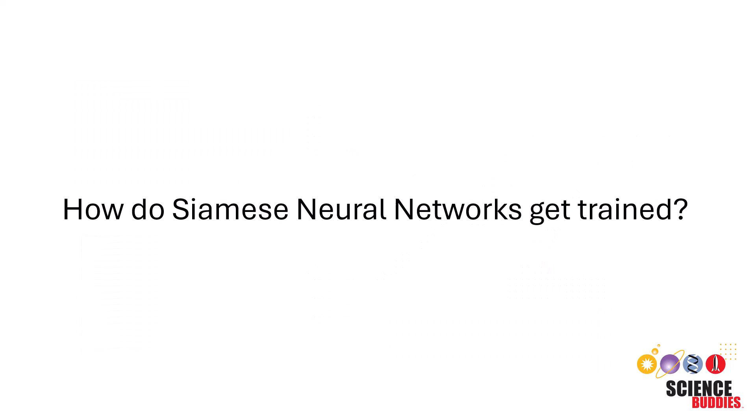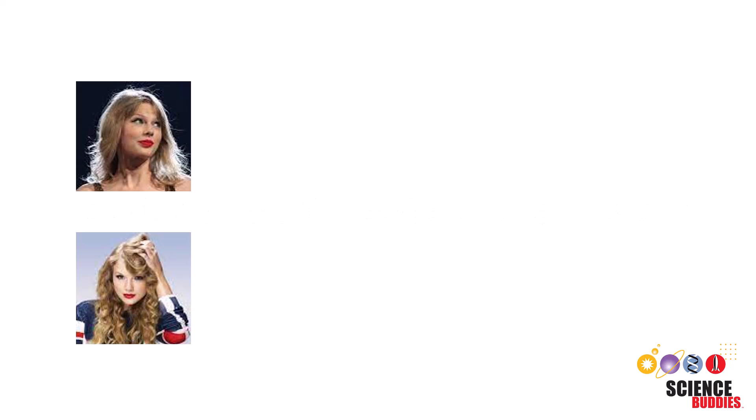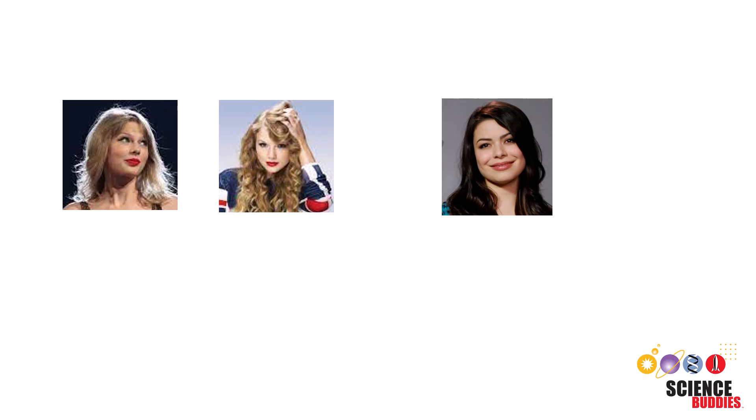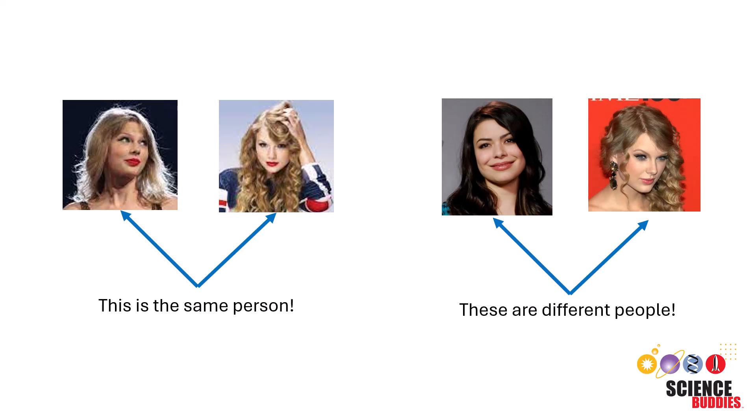Now that we understand the architecture of Siamese neural networks, let's explore how they are trained. Training a Siamese network typically involves feeding pairs or triplets of labeled inputs into the network. For tasks like image recognition or similarity assessment, pairs of inputs are labeled as either similar or different.